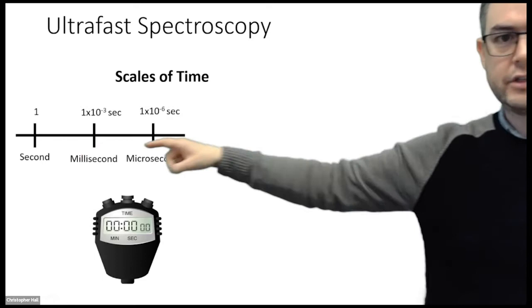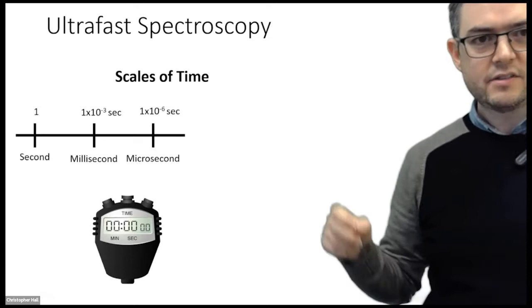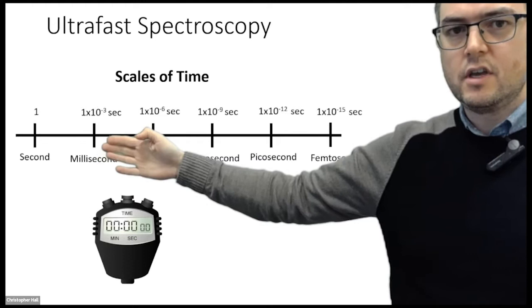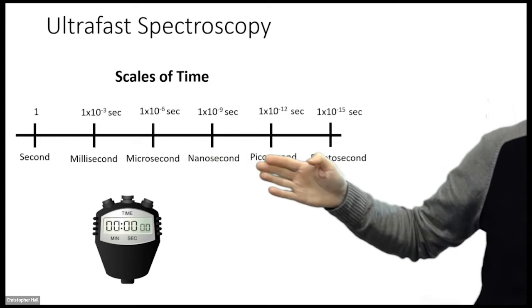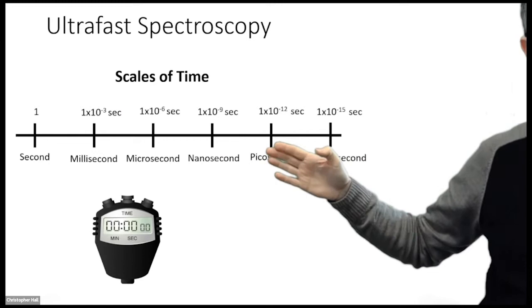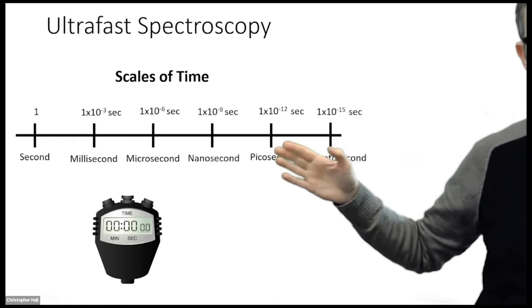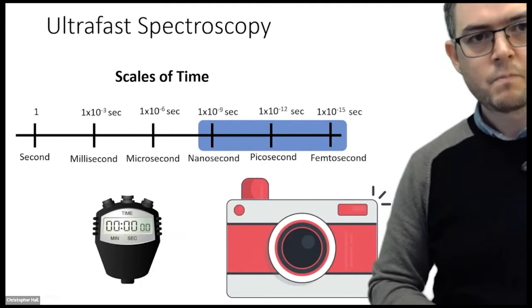That only puts us about here on the timescales. When we start thinking about chemical processes and excitons, we need to really dig down into the scales of time. The processes that we look at is quite a bit faster than milliseconds, faster than microseconds. Nanoseconds, we're going to keep going. Picoseconds, this is where we need to be, in this picosecond to femtosecond regime. When we're talking about time on these scales, we're talking about a number with 15 decimal places. These are extremely fast processes, and you need very specialised equipment.